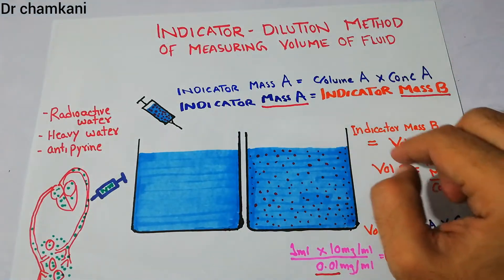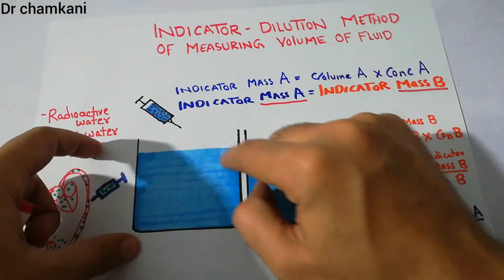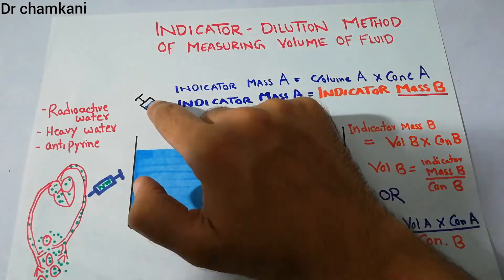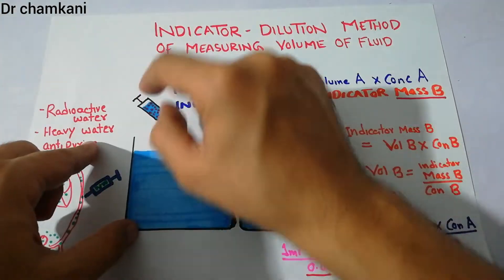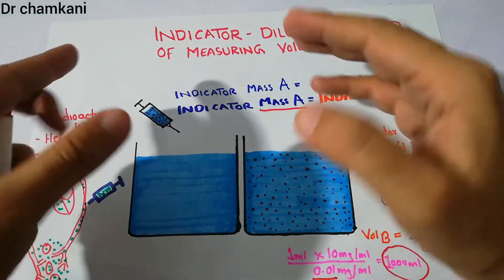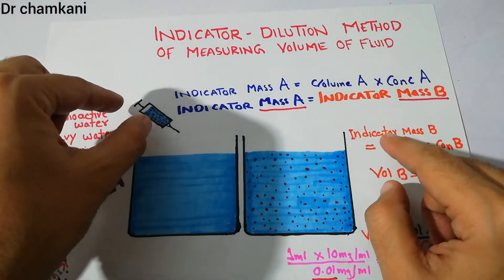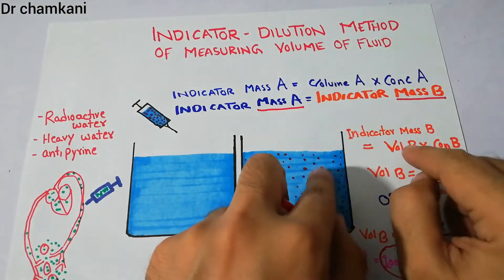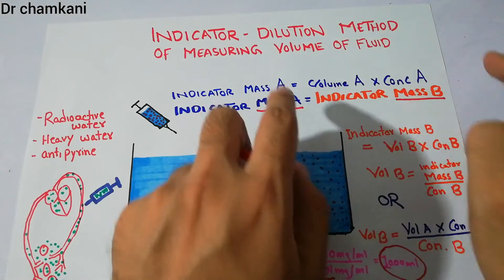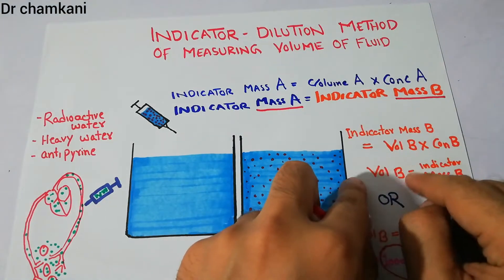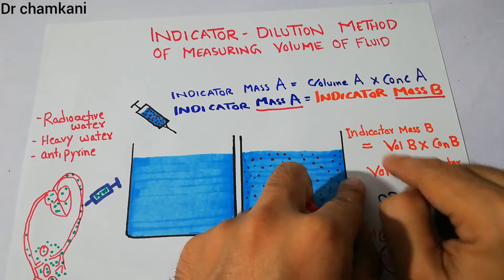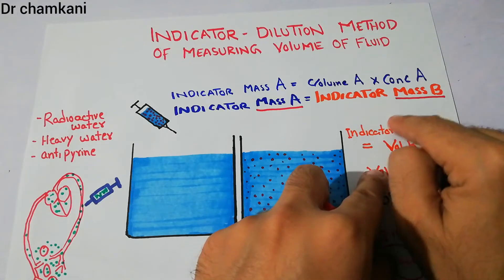The concentration decreased because the volume of this fluid is bigger than the volume of this dye. That is the reason that this concentrated dye distributes in a bigger volume, so its concentration decreases. The indicator mass B is also the product of volume B and concentration B, just like mass A was the product of volume A and concentration A. By rearranging this equation, volume B is basically mass divided by concentration.